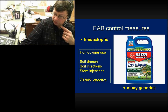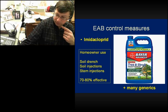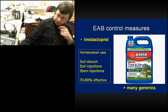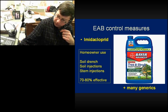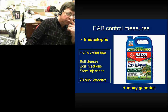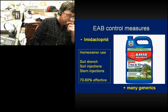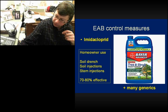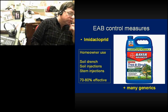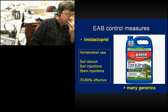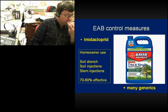Imidacloprid is the most commonly used option — it's the active ingredient in Bayer Advanced Tree and Shrub Insect Control and a whole variety of generic products, all at 1.47% imidacloprid. This is the one homeowners can use as a soil drench; professionally it can be applied as a soil injection or stem injection. Research found it was about 70–80% effective. Apply it in spring just as the leaves are starting to unfurl.